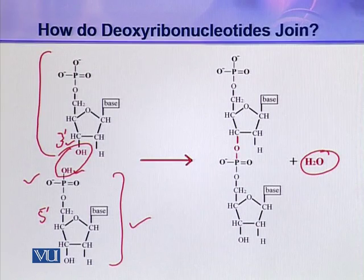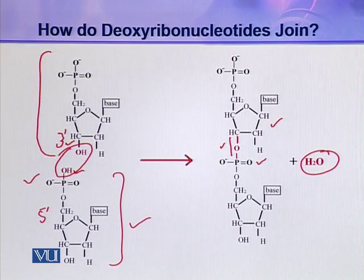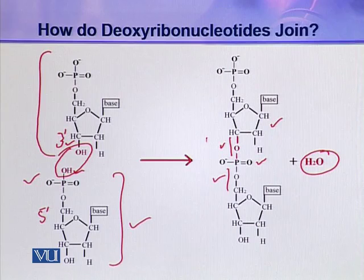This ester linkage is established between the pentose of one nucleotide and the phosphoric acid of the other nucleotide, so one nucleotide is attached to the other through this ester linkage. Then why is this linkage called phosphodiester linkage? Because this is one ester and this is another ester — two esters and a phosphate group are included in this whole linkage, which is why it is called phosphodiester linkage.